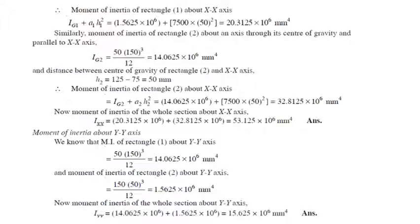IXX is the sum of the previous two values. For the YY axis, since the section is symmetrical about YY, we add the moment of inertia of rectangle 1 and rectangle 2 about the YY axis through the centroid, each given by DB cubed by 12, to get IYY.